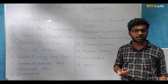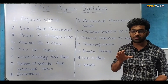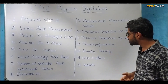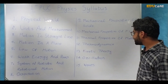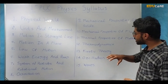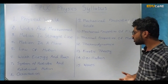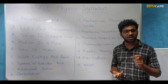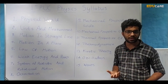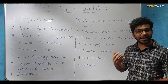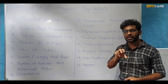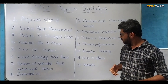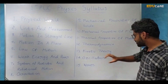The next chapter is Kinetic Theory. In this chapter we are going to study various laws like Charles's Law, Boyle's Law, and the ideal gas equation, which is PV equals nRT or PV equals μRT. The ideal gas equation and the behavior of ideal gases are the main concepts included in Kinetic Theory.